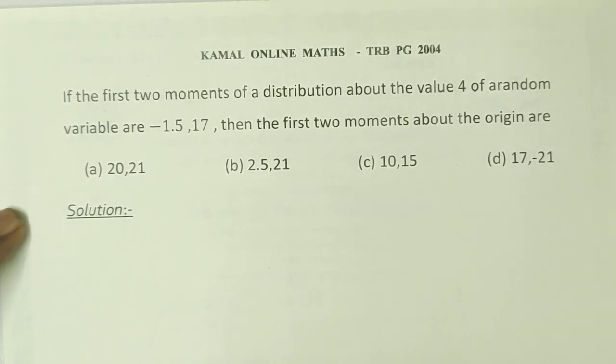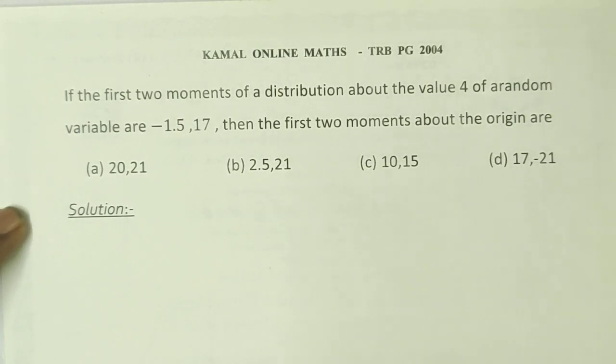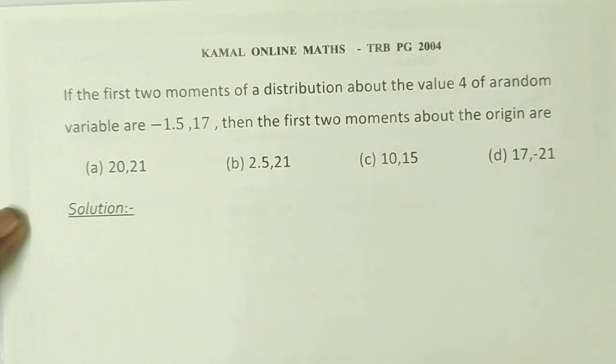Welcome to Komala Online Max. Statistics question 2004 located in South Pondaparum. If the first two moments of a distribution about the value 4 of a random variable are minus 1.5 and 17, then the first two moments about the origin are options.